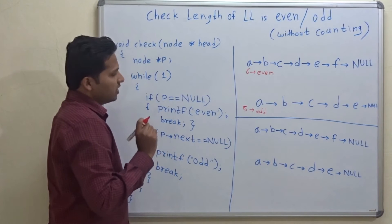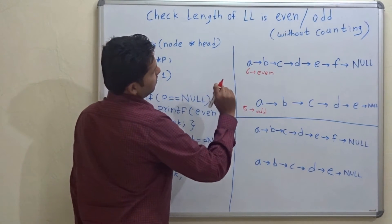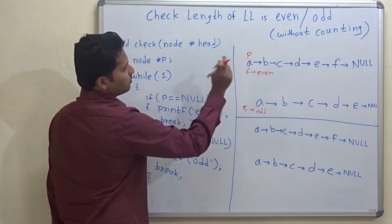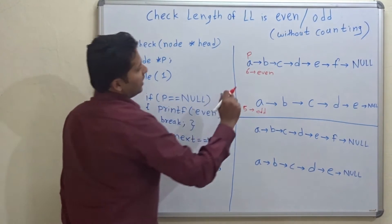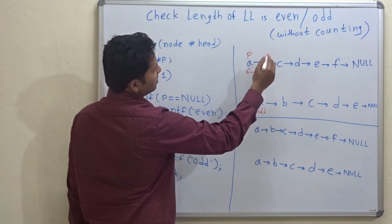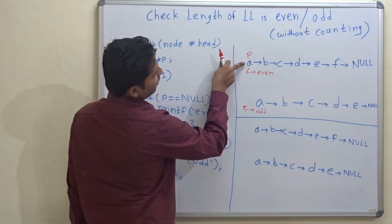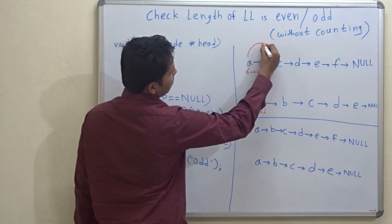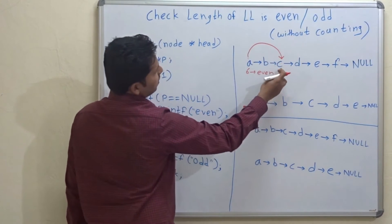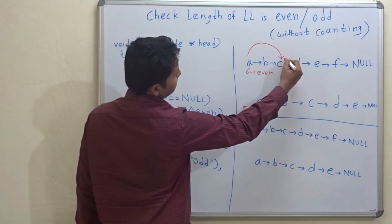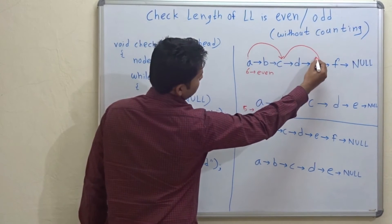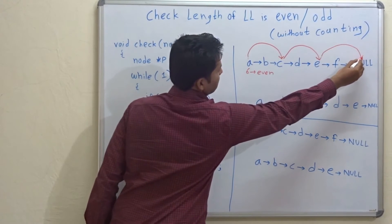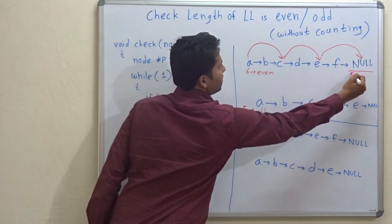So let's check the code for this. I will first tell you the steps for writing the code. Imagine there is a pointer P which is pointing to A. If this pointer increases by two steps at a time, it is pointing to A at this stage. Now this will go two steps further, so it will point to C. In the next iteration, two steps further, it will point to E. And then two steps further, it will point to null.